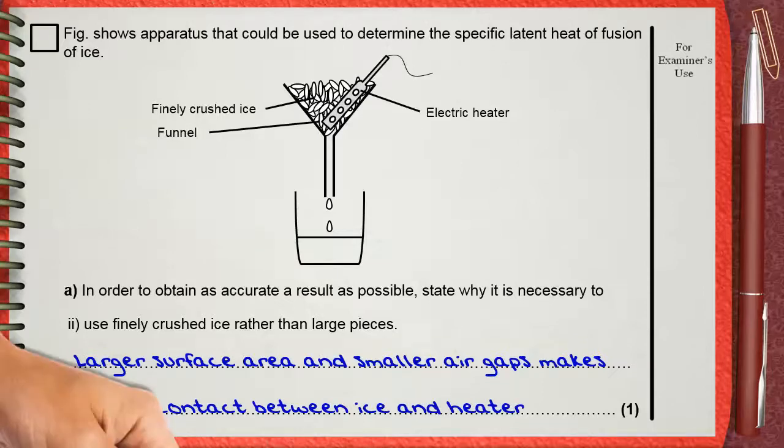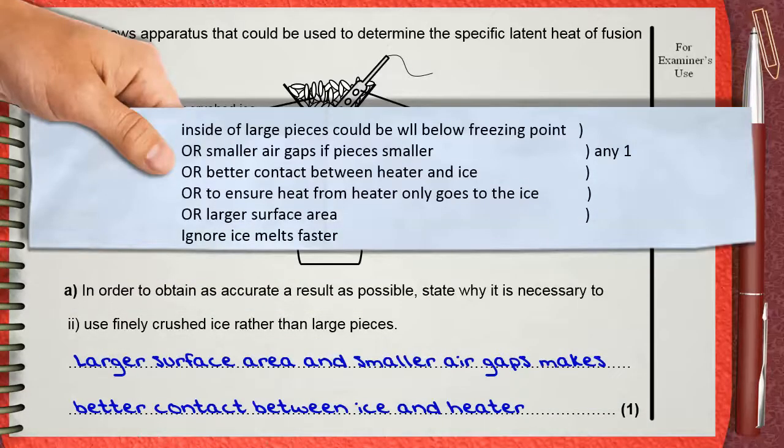The mark scheme gives many options here. Inside of large pieces could be well below freezing point, or you can say smaller air gaps if pieces smaller, or better contact between heater and ice, or to ensure heat from heater only goes to the ice.